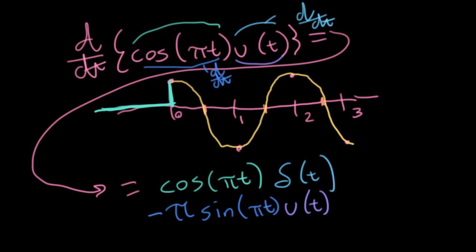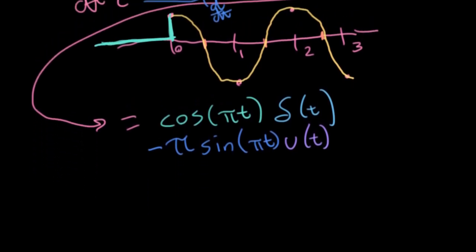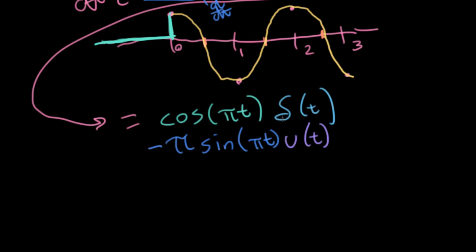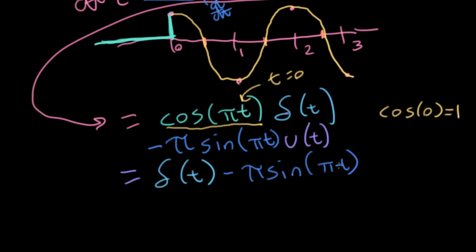And that's all well and good. But I can actually simplify this a little bit by saying, ah, we have a function multiplied by a delta. The delta is going to clear out everything that isn't at zero. So the only place that this particular term here is meaningful is at the place where t equals zero, because everything else is going to get zeroed out. And cosine of zero is one. So my first term is actually going to be one times delta t, which I'll just go ahead and write here as delta t. And then I can rewrite the rest of this expression, my pi sine pi t, u(t).